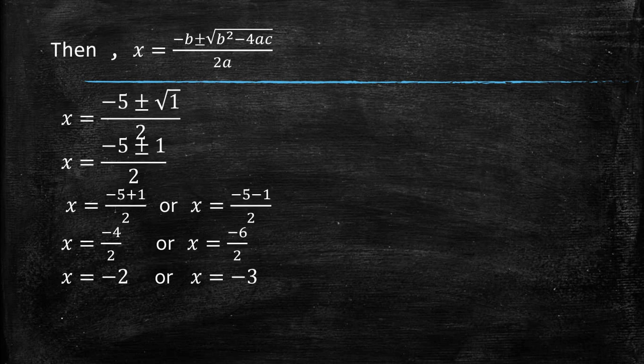Then x = (−b ± √(b² − 4ac)) / 2a = (−5 ± √1) / 2. Therefore x = (−5 + 1) / 2 = −2 or x = (−5 − 1) / 2 = −3. The roots of the given polynomial are −2 and −3.